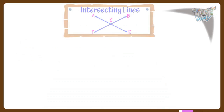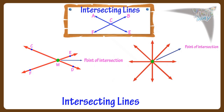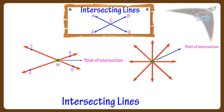Let's see what are intersecting lines. Two or more lines that meet at a point are called intersecting lines, and the point at which the lines meet is called the point of intersection. Here, this is the point of intersection of these two lines, and here this is the point of intersection of all these lines. The two lines CD and EF are intersecting at point M.